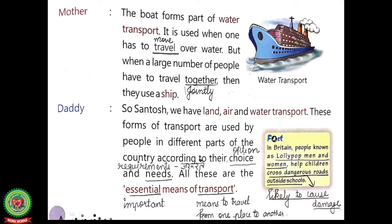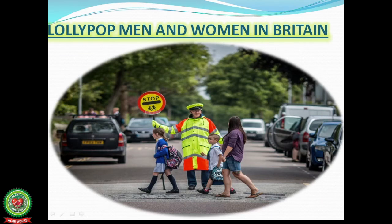Now it's time to read a fact. In Britain, people known as lollipop men and women help children cross dangerous roads outside schools. Underline 'dangerous' — meaning: likely to cause damage. See the picture of lollipop men and women in Britain — they help children to cross dangerous roads.